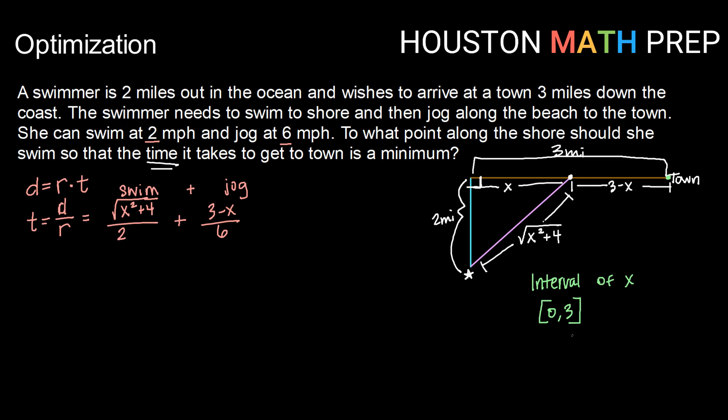So next we want to figure out what are the critical point or points in that interval. So we'll do that by finding t prime. But before we do that, let's see if we can rewrite this function in a way that makes it a bit easier to take the derivative. So I'm going to think of this as one-half times x squared plus four to the one-half power, plus here just putting each term in the numerator over the denominator separately. Three over six is the same as one-half minus x over six. I could think of that as one-sixth x. So now that's a bit easier to take the derivative of.